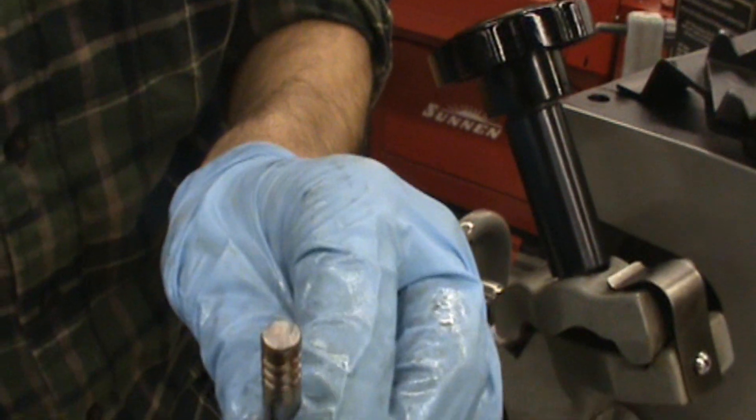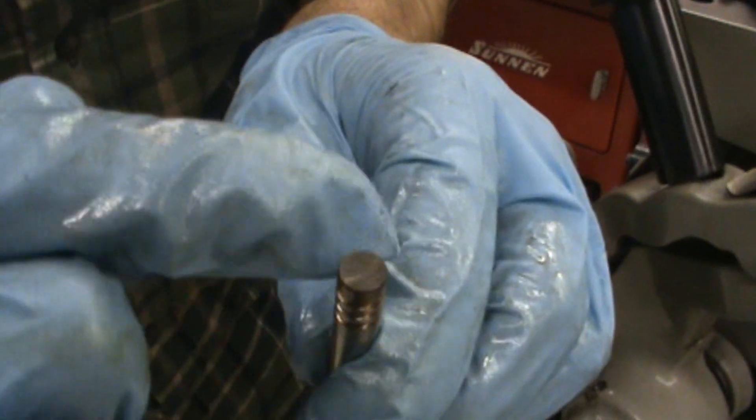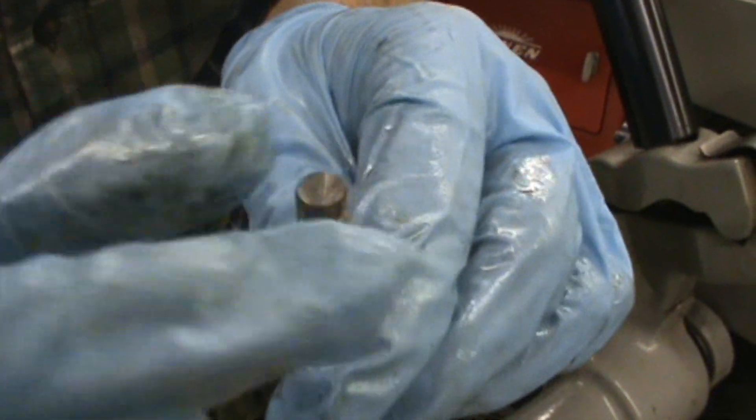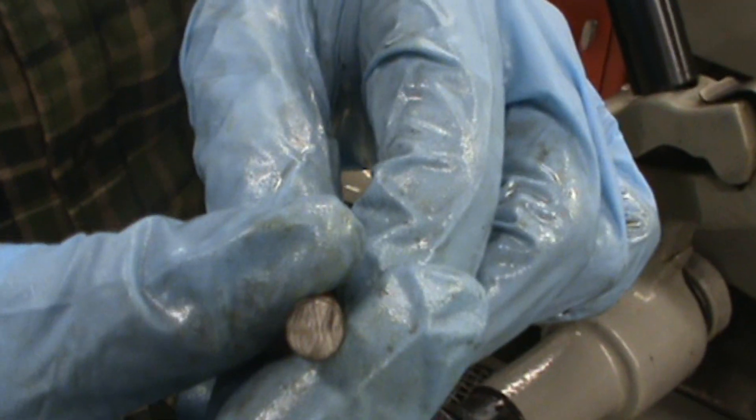Then we're going to look at the top of the valve and make sure that the grind hatch marks are across the whole top of the valve. This thing looks pretty smooth.